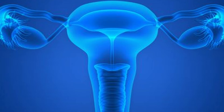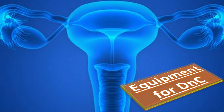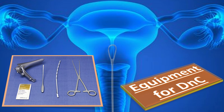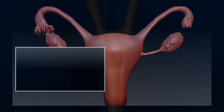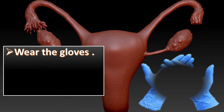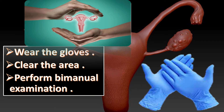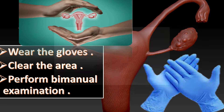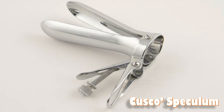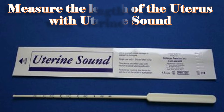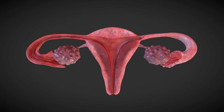Ensure all required equipment is present and ready. After wearing gloves, clean the area and perform a manual examination to assess the position, size, and mobility of the uterus. Introduce the Cusco speculum of appropriate size after lubricating it and fix it to visualize the cervix. Then measure the length of the uterus with the uterine sound and gently introduce the large curette.